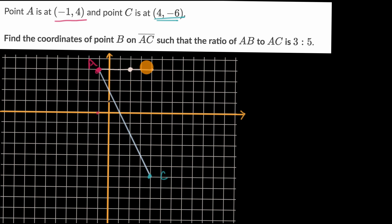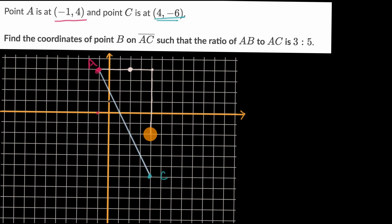And then we can look at the Y coordinate side. To go from A to C, we are going from four to negative six, so we're going down by ten. And three fifths of ten would be six.